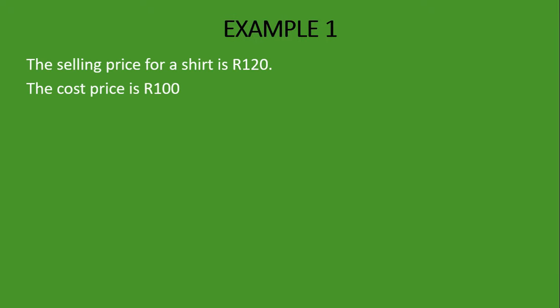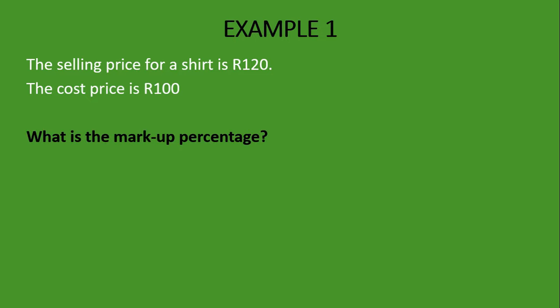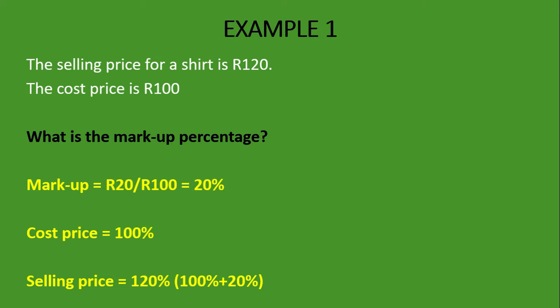Let's look at the first example. The selling price for a shirt is 120 Rand and the cost price is 100 Rand, so the profit is 20 Rand. What is the markup percentage? With the markup, the denominator is the cost price, which is 100%. So the markup is 20 Rand divided by 100 Rand, equals 20%. The cost price is 100% and the selling price will be 120%, because cost price of 100% plus markup of 20% gives us the selling price of 120%.